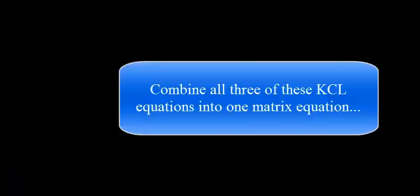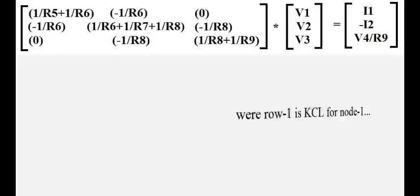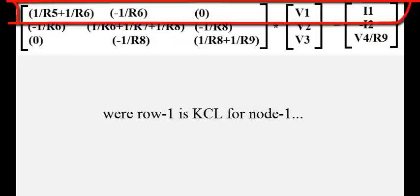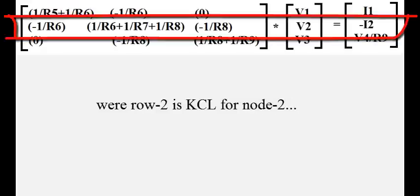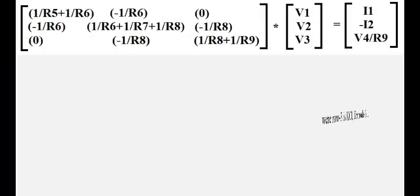Combine all three of these Kirchhoff's current law equations into one matrix equation. Row 1 is Kirchhoff's current law for node 1. Row 2 is Kirchhoff's current law for node 2. Row 3 is Kirchhoff's current law for node 3.